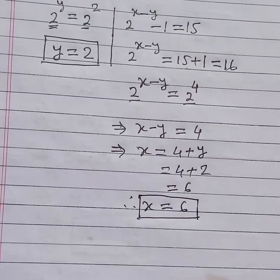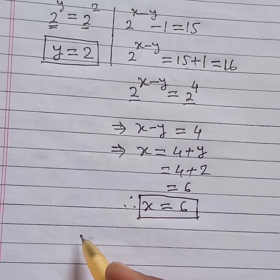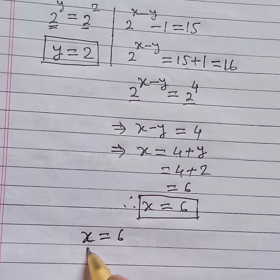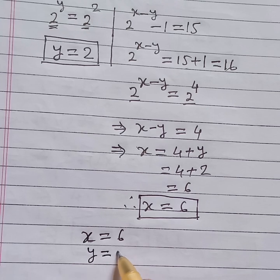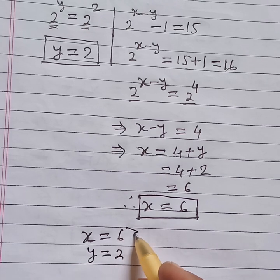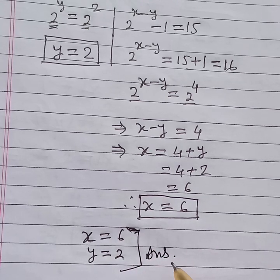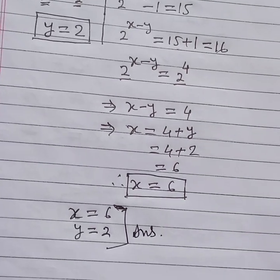Therefore, we get x is equal to 6. So, the answer is x is equal to 6 and y is equal to 2. This is the final answer of this equation.